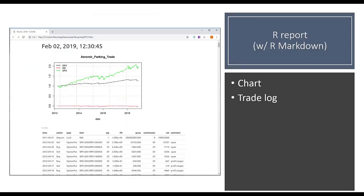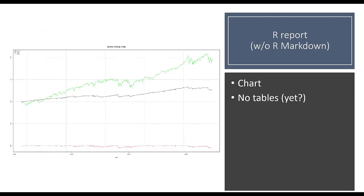With R Markdown, you get the same charts in different colors rendering to HTML in your browser, with the same information as the Excel output but not interactive. Without R Markdown but just plain R, there's no way to see tables. If going the R route, install R Markdown.